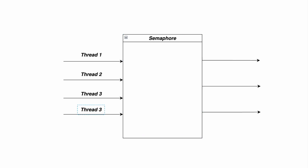Now imagine at some point in the future thread four comes along and says it wants to execute and needs to acquire a permit. The semaphore says that's fine, but it doesn't have a permit available right now, so thread four should wait. Thread four gets blocked — it had called the acquire method and is going to be blocked on it. Sometime in the future when thread one is done with its execution, it will say it is done and will release the permit it had acquired. The permit is given back to the semaphore, and as soon as that happens, the thread waiting for a permit will acquire it and proceed with its execution.